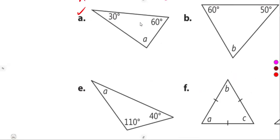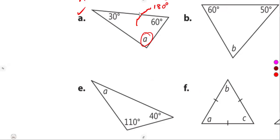On part a, we have a triangle with two angles given, and angle A is the unknown. In a mathematical statement, we understand that the sum of the interior angles must be 180 degrees. So if we have two angles and do not know the third, we can simply subtract the two given angles from 180 degrees. So A equals 180 degrees minus the two given angles.